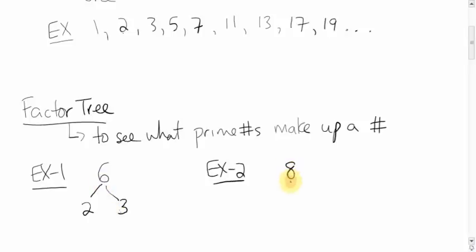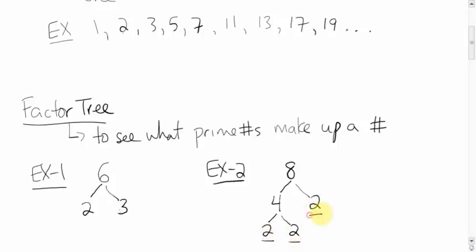For the number 8, what two numbers make up 8? Well, 4 times 2. Now 2 is a prime number, but 4 is not, so you can further break up 4. What two numbers make up 4? 2 times 2. Once you've reached a prime number, you don't add more branches. So the prime factors of 8 are 2, 2, and 2. And the prime factors of 6 are 2 and 3.